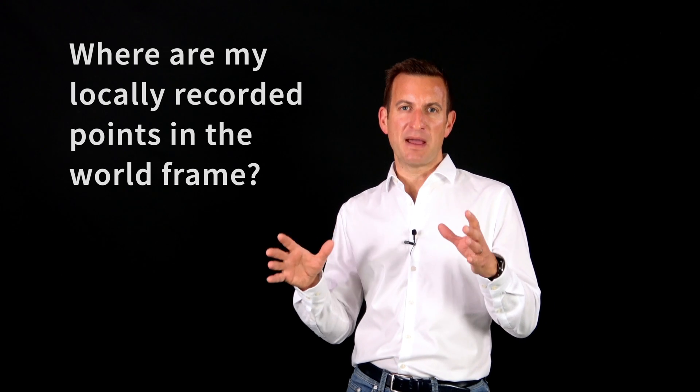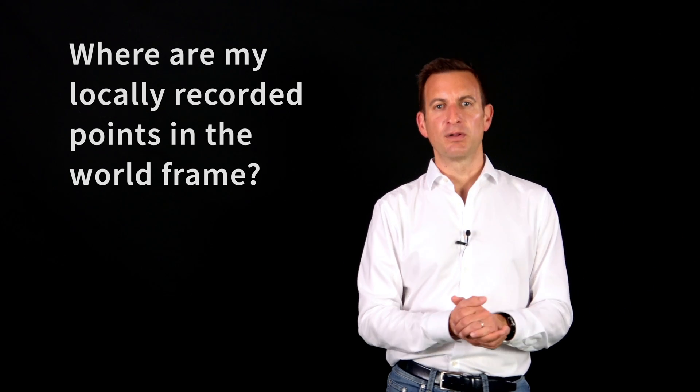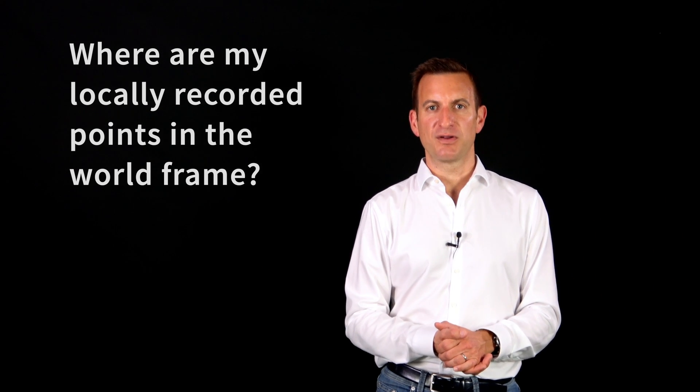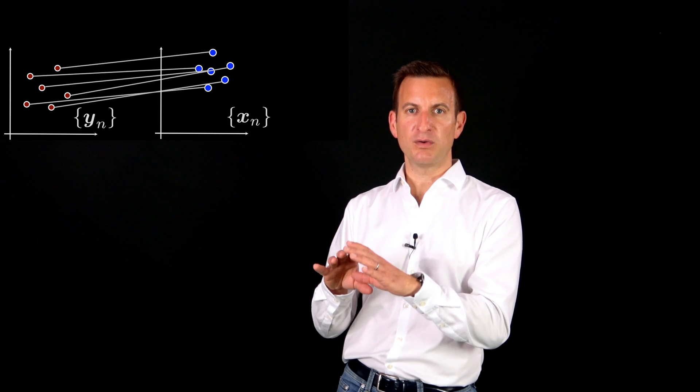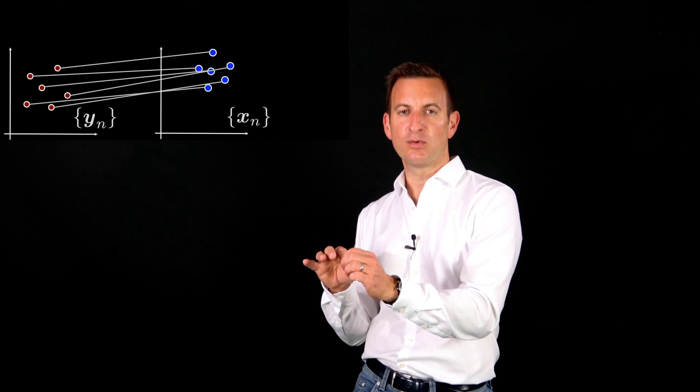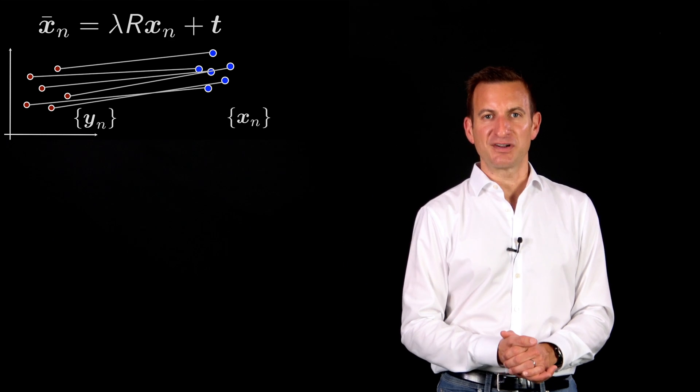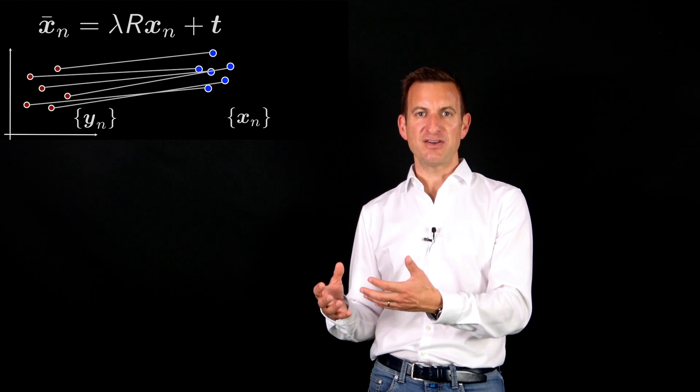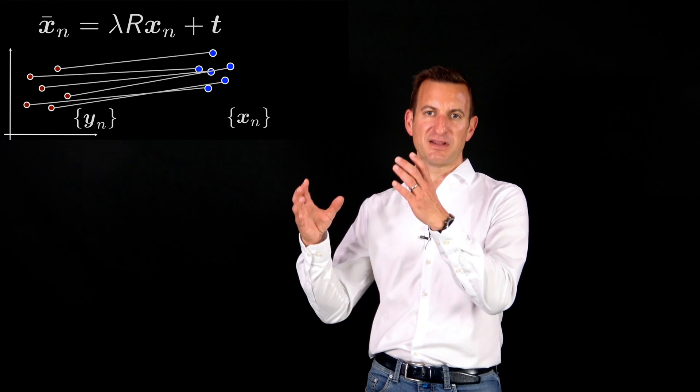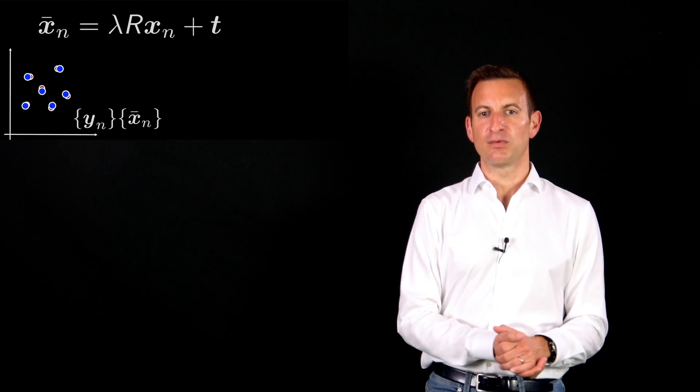You want to say, okay, where are my points which are just computed in a local coordinate system in the global coordinate system or in my map coordinate system? If you know a few points, how they correspond with each other, so knowing which point that you've locally observed is which point in your map, then the absolute orientation problem is for you because it allows you to compute the transformation parameters so that you can transform your points from your local reference frame into the global reference frame.